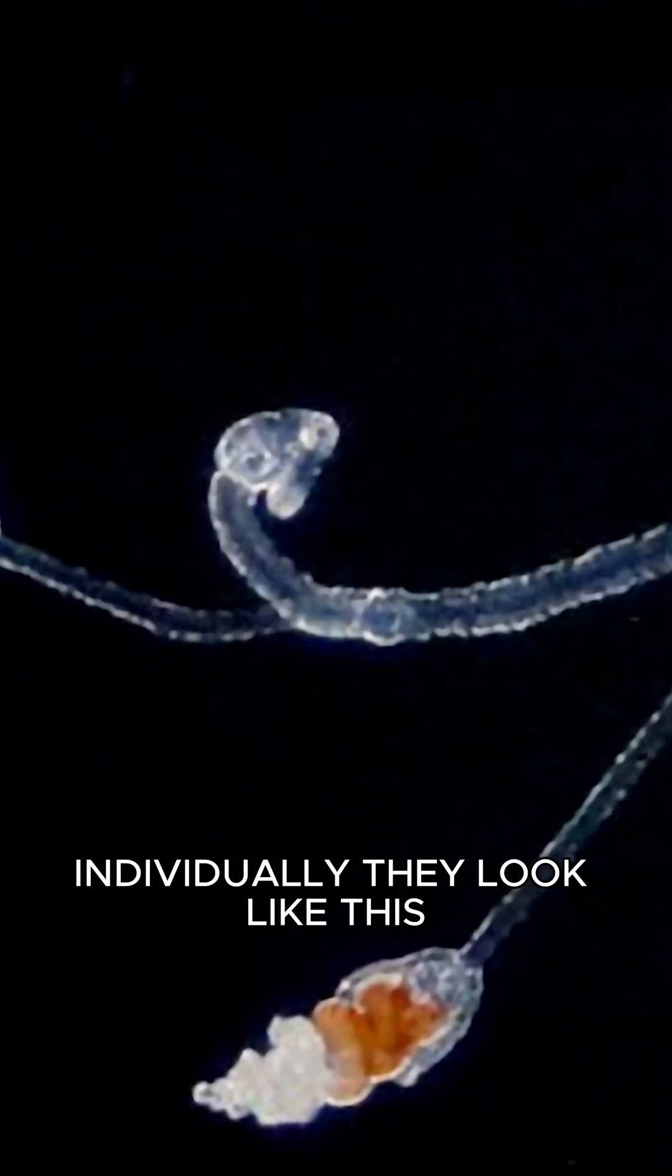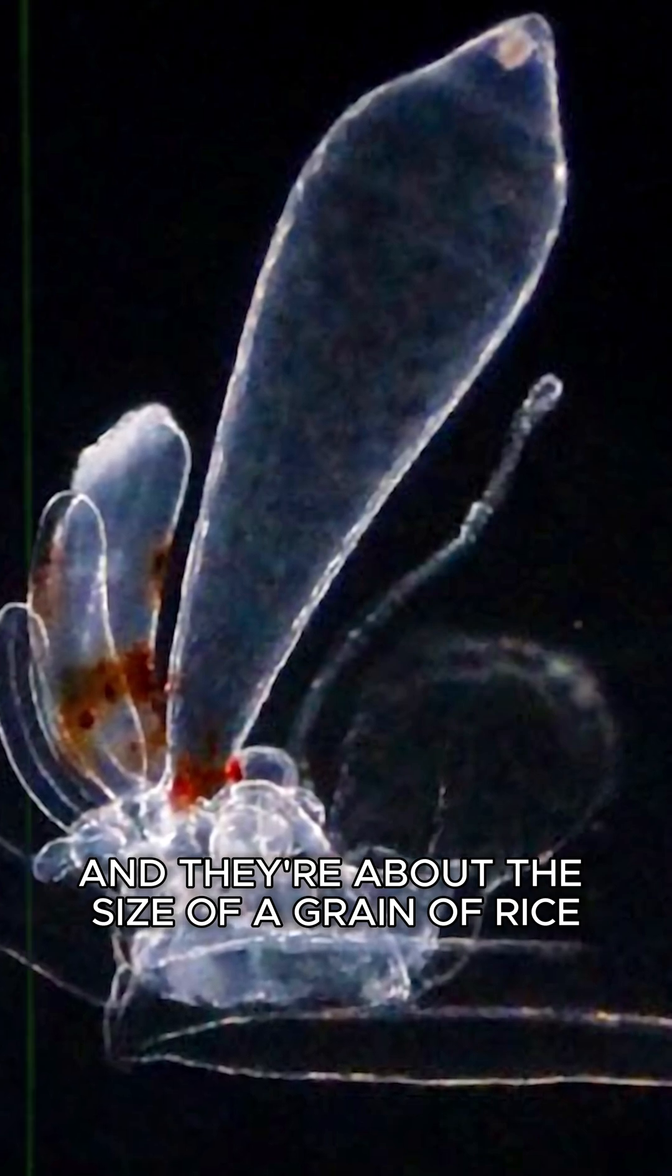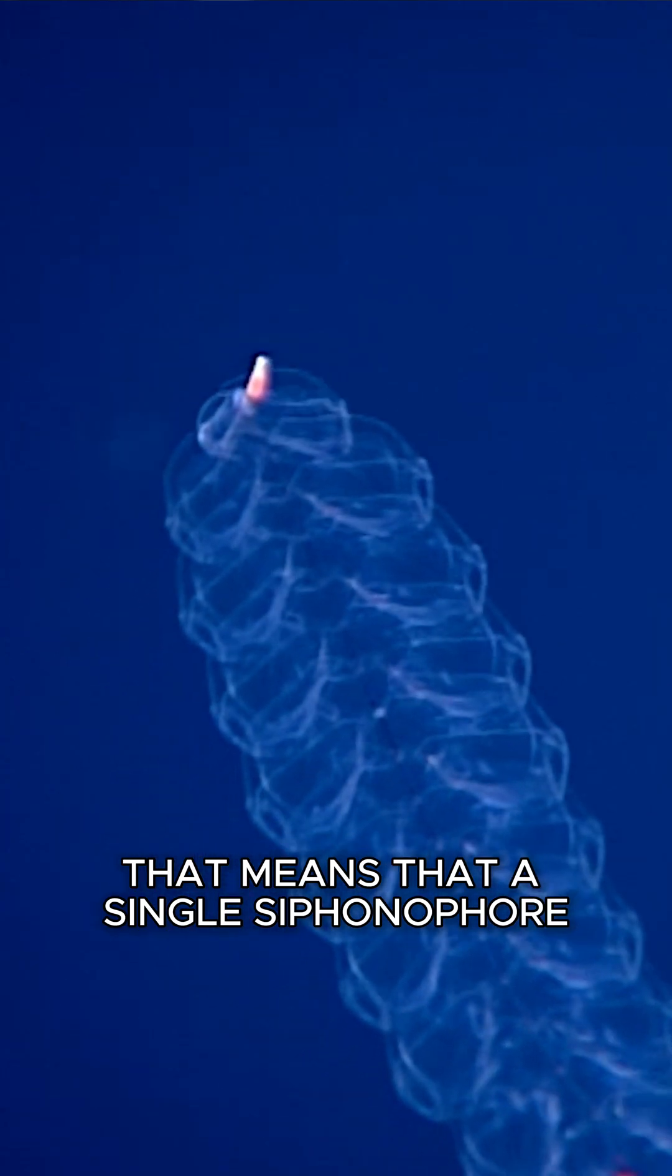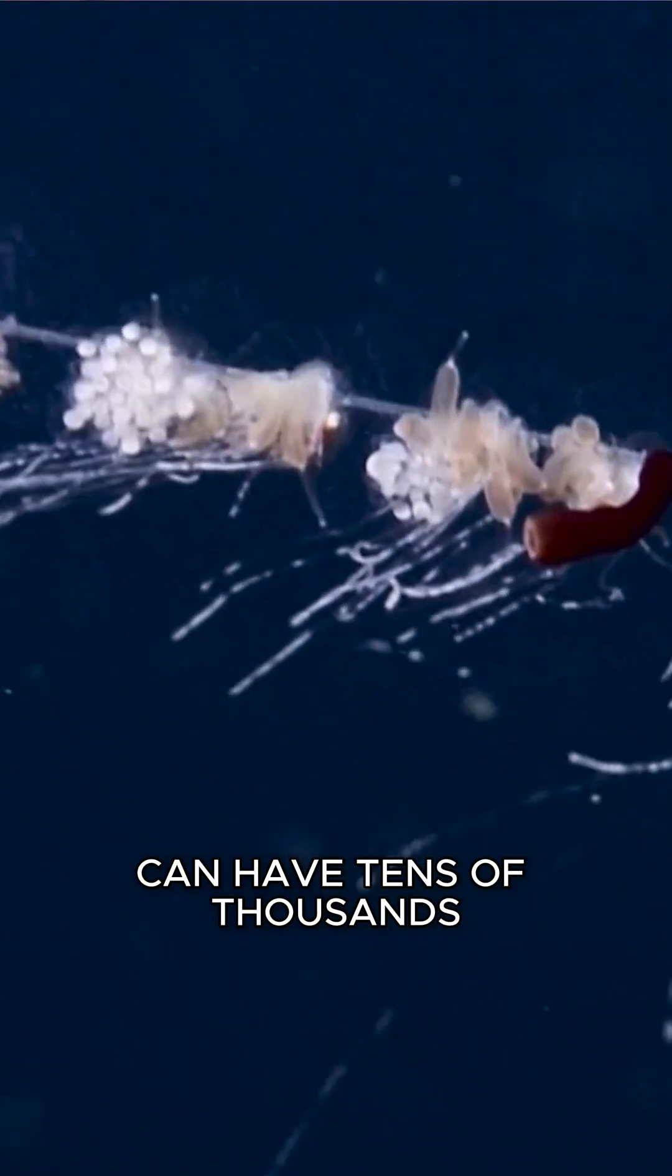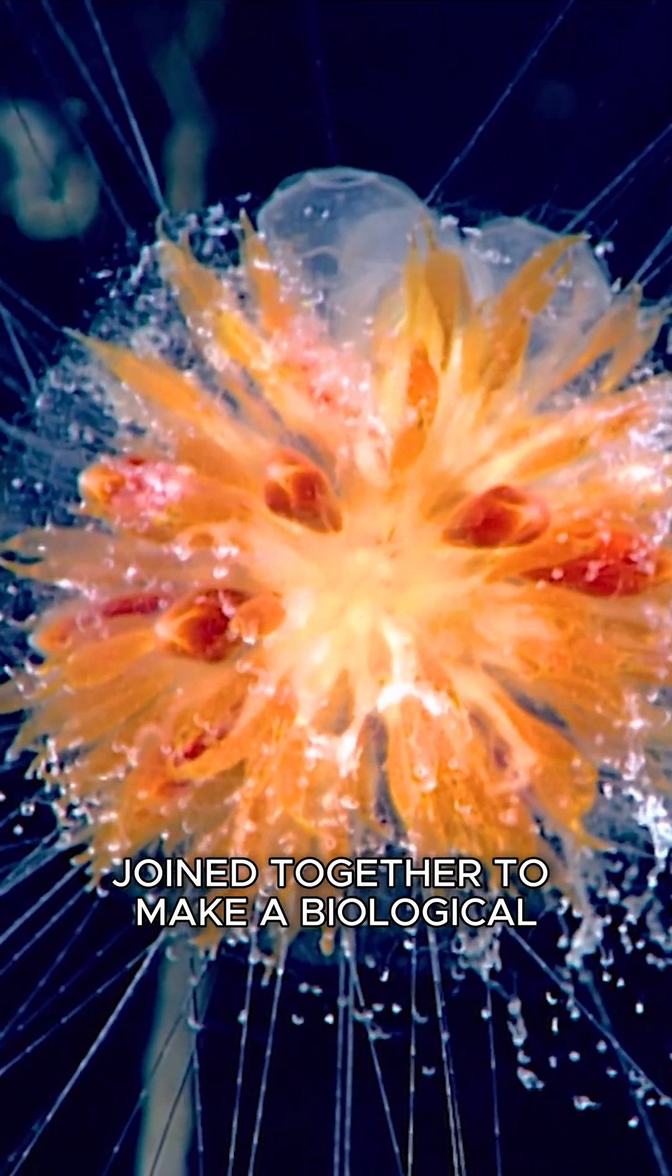Individually, they look like this. They're called Zoids, and they're about the size of a grain of rice. That means that a single siphonophore can have tens of thousands of individuals joined together to make a biological mecha predator.